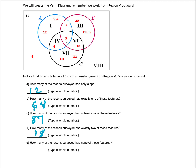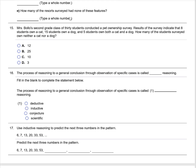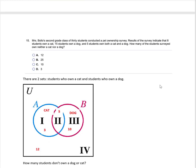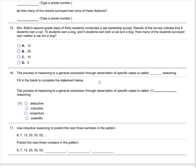How many had none of those features? That's the region eight number, which is six. For question 15: Mrs. Bolo's second grade class of 30 students conducted a pet ownership survey. Eight students own a cat, 15 own a dog, and five own both. I start in region two with five students who had both. Eight students had a cat, but five are already in region two, so three have a cat only. Likewise, 10 students have only a dog. Adding regions one, two, and three, 12 students had neither a cat nor a dog. The answer is A.